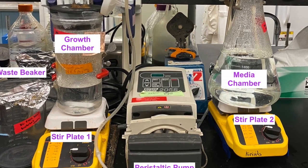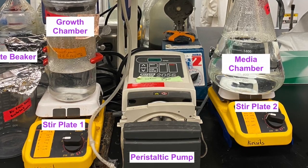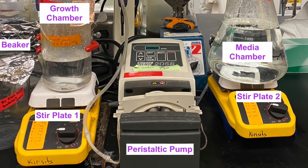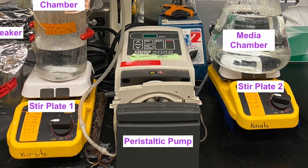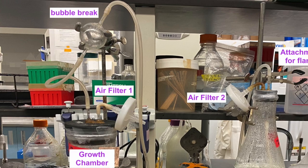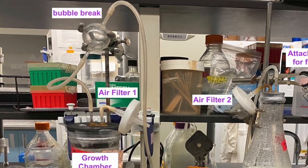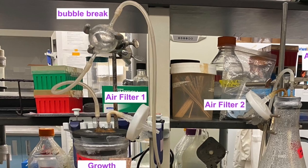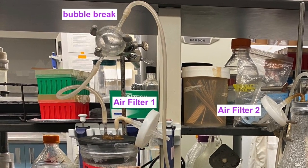Both the growth chamber and the media chamber sit on top of stir plates. This ensures that the concentration inside both of these chambers is homogeneous and uniform. There is a bubble break above the growth chamber to ensure that there is no backflow out of the growth chamber and into the media chamber.